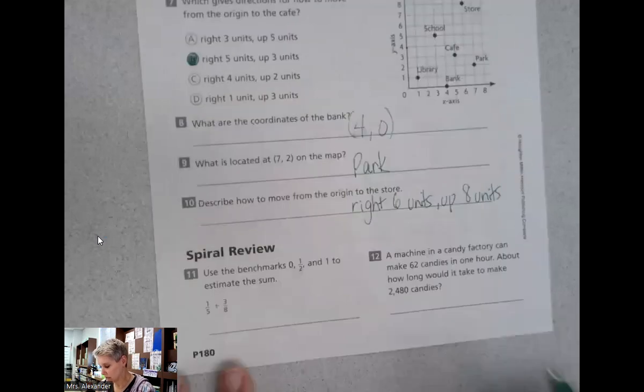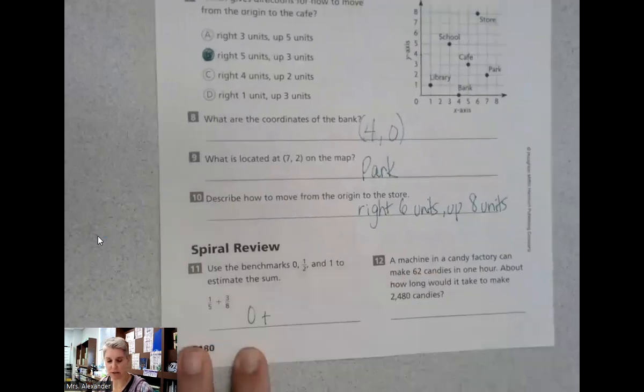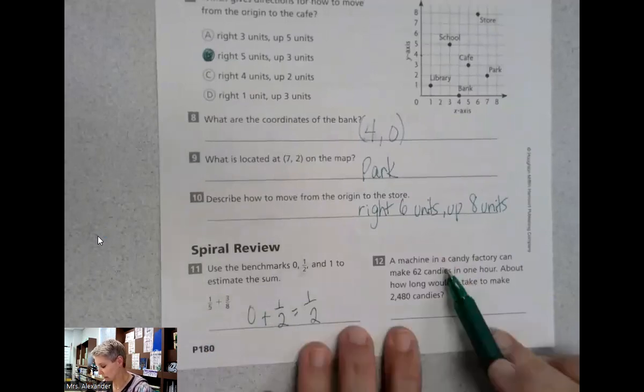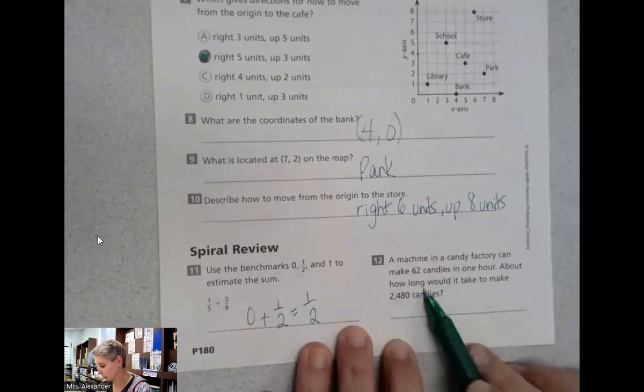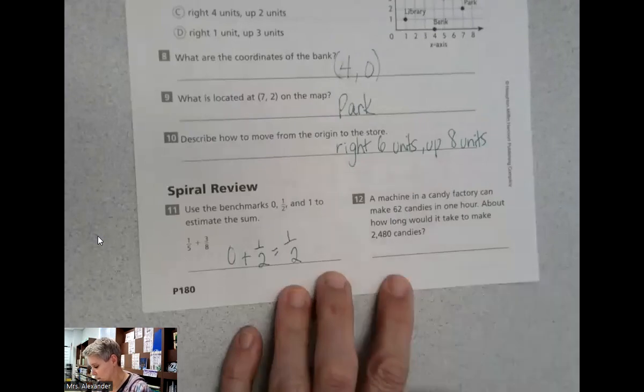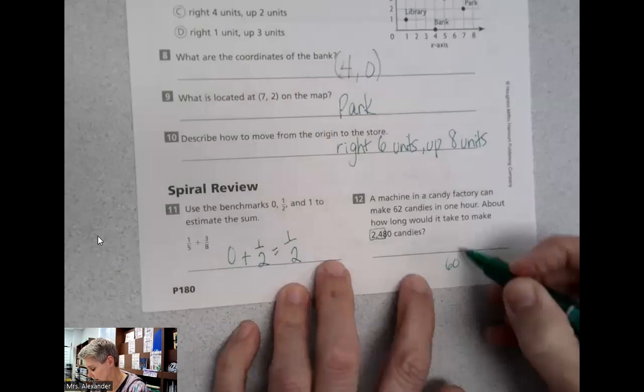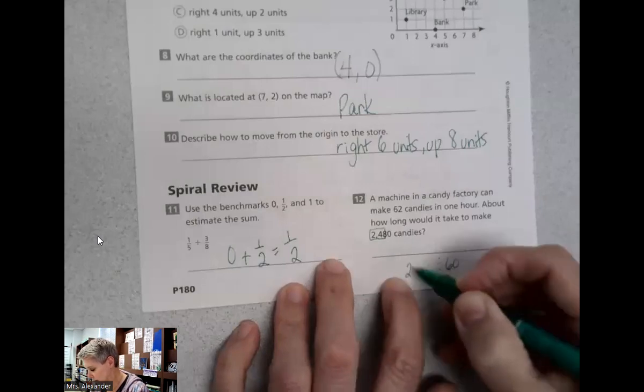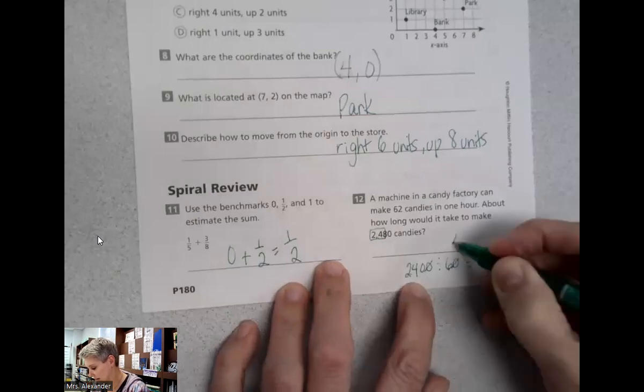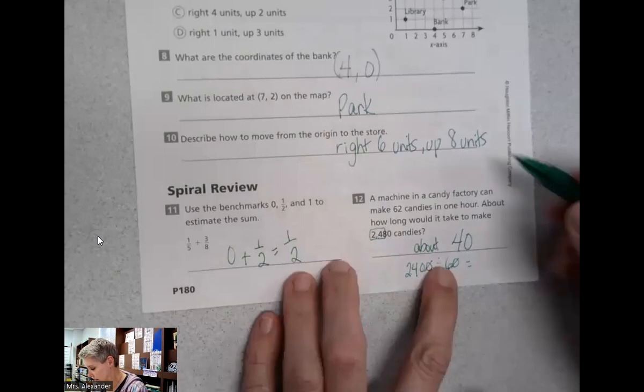Some spiral review. Using benchmarks to estimate, one-fifth is about zero. Three-eighths is about, you remember benchmarks, three-eighths is about one-half. So we would get an estimate of about one-half. A machine in a candy factory can make 62 candies in one hour. About how long would it take to make 2,480 candies? If you remember this from dividing, we're dividing these candies, we would take our divisor, 60.